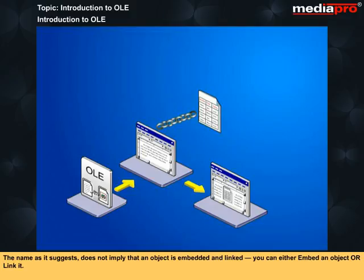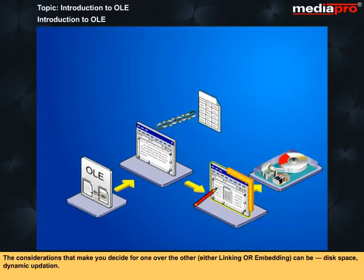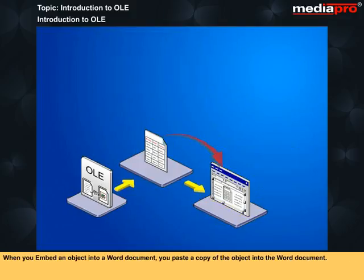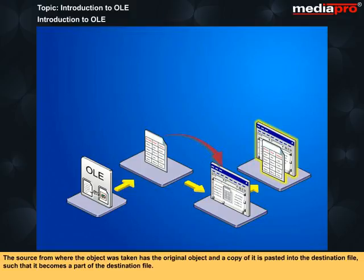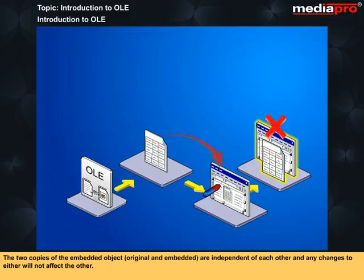The name OLE does not imply that an object is both embedded and linked — you can either embed an object or link it. The considerations that determine your choice between linking and embedding can be disk space and dynamic updation. When you embed an object into a Word document, you paste a copy of the object into it. The source retains the original and the copy becomes part of the destination file. The two copies are independent — any changes to either will not affect the other.